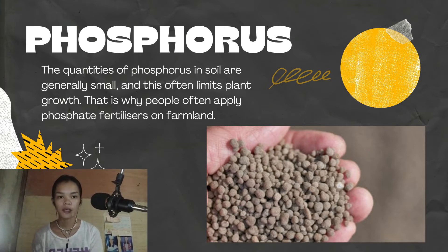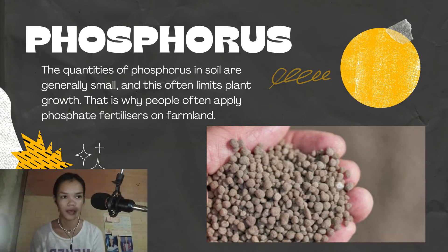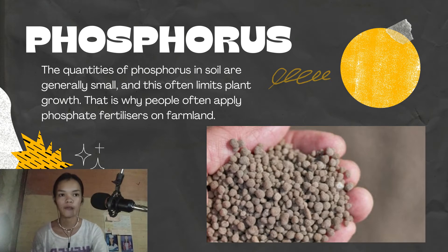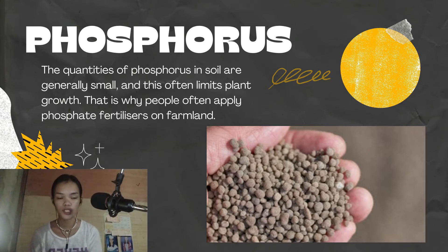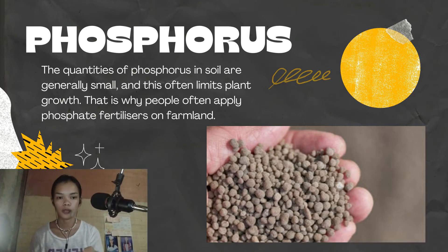That is why people often apply phosphate fertilizers on farmland. 80% of the mined phosphorus is used to make fertilizers. Phosphate from fertilizers, sewage, and detergents can cause pollution to lakes and streams.